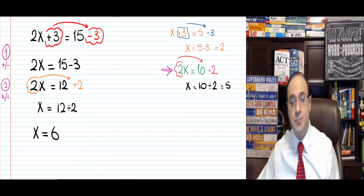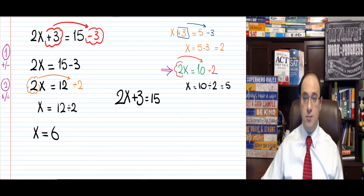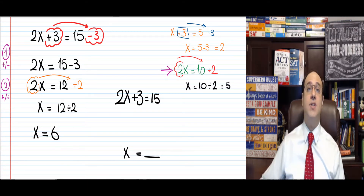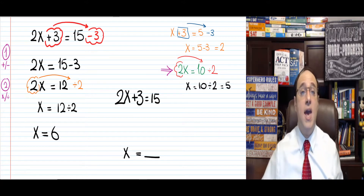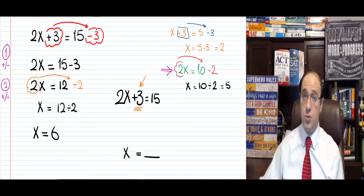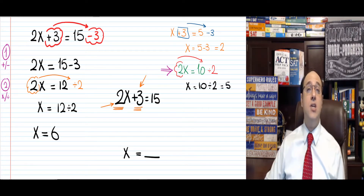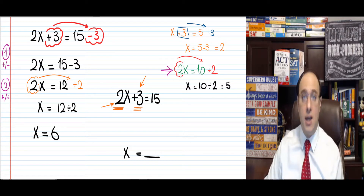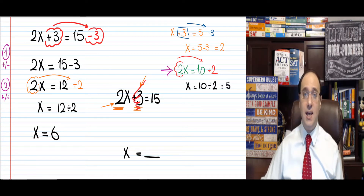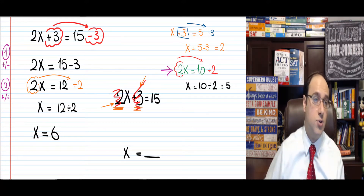Let's recap really quickly. 2x plus 3 equals 15 — this is what I had originally. I want to get x equals something. In order to do that, I must get rid of anything next to the x. In this case, I have two things next to the x: something that is added or subtracted, which is the plus 3, and something that is multiplied or divided, which is the times 2. I can't get rid of both in one step — I need to do this in two steps. First step: I got rid of the plus 3. Second step: I got rid of the times 2. Two steps, got the final answer for x.